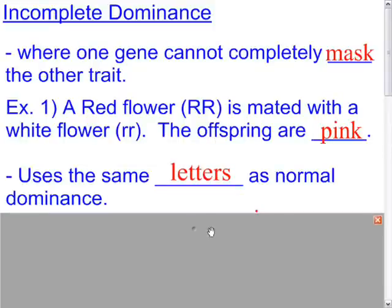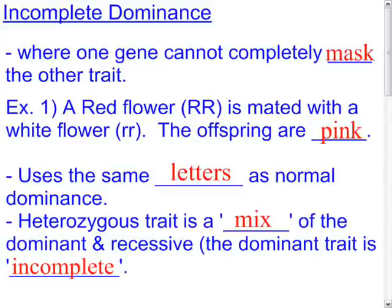This uses the same letters as normal dominance. We don't use separate letters for each trait as we did in co-dominance. We use capital R for the dominant trait and lowercase r for the recessive trait. The heterozygous trait is different — it's a mix of the dominant and the recessive, because the dominant trait is incomplete.